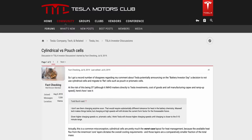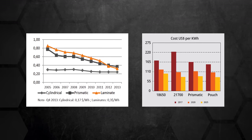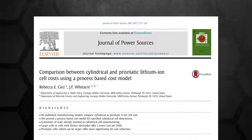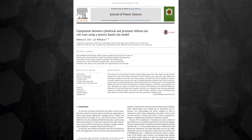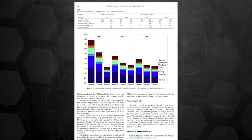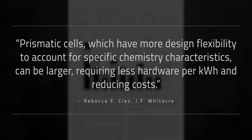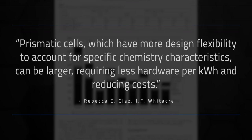Over the years there have been debates about why one format is better than another, and why Tesla chose cylindrical over prismatic. But in reality it comes down to cost and what's most effective for the chemistry and use case. For years cylindrical cells were the cheapest to manufacture, but that's changed — prismatic cells aren't that different cost-wise anymore. A research paper from the Journal of Power Sources by Professor Whitaker from Carnegie Mellon compared manufacturing costs between cylindrical and prismatic cells, finding that prismatic cells, with more design flexibility for specific chemistry characteristics, can be larger, requiring less hardware per kWh and reducing costs.